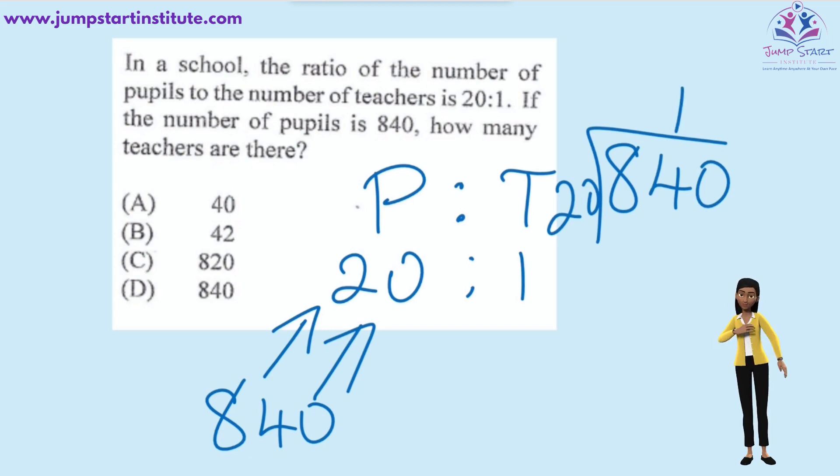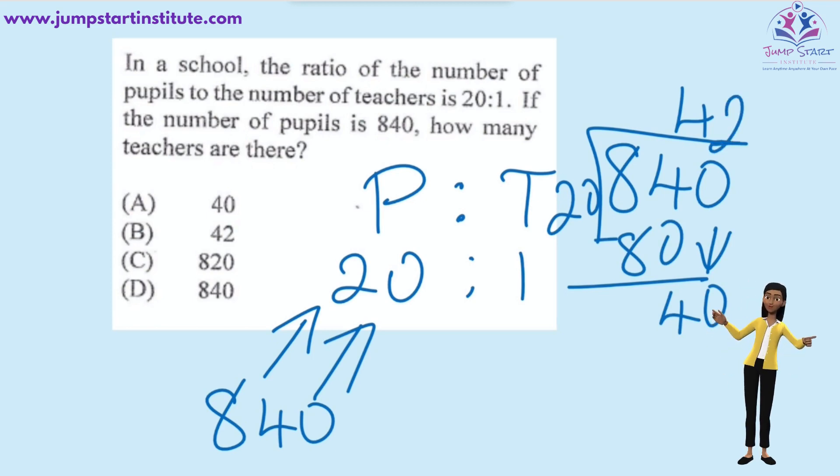Four times 20, that's 80. Subtracting here, we get four. And carrying down the zero here, we get 40. 20 into 40 goes two times. Therefore, one share or one portion is equal to 42. Therefore, how many teachers are there? Because teachers is represented by one portion, it means that there will be 42 teachers.